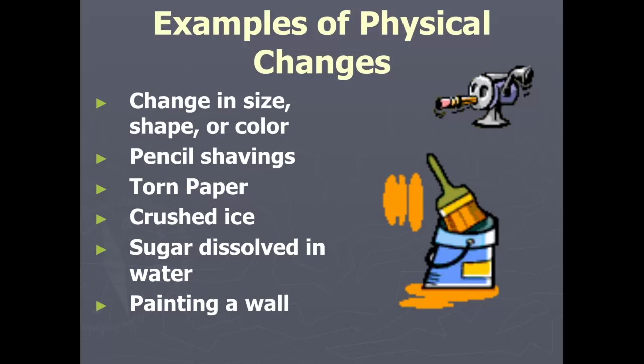Sharpening a pencil and getting pencil shavings — it's still bits of pencil, not a new substance. Tearing paper, crushing ice — it's still paper and ice, just in tinier chunks. Sugar dissolved in water still tastes like sugar in water — it's still the same thing, just dissolved. And painting a wall is a perfect example of a change in color that is physical — it's still paint and a wall.